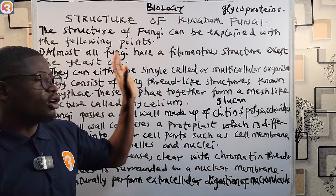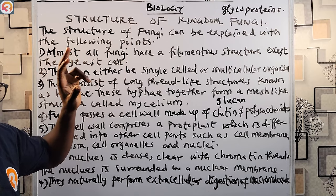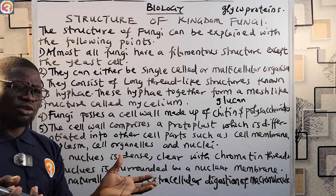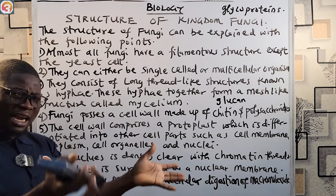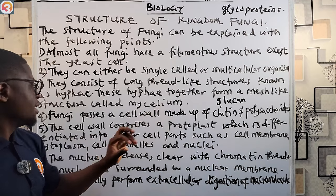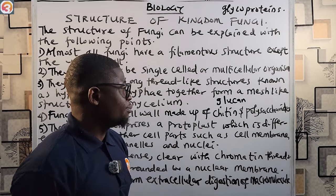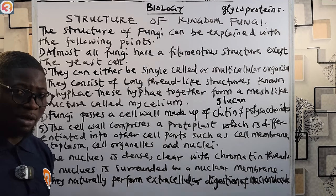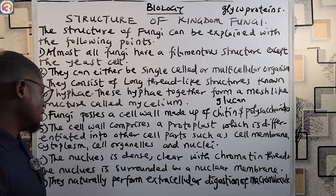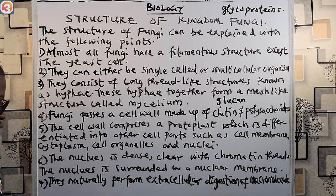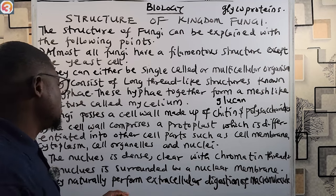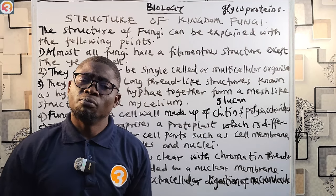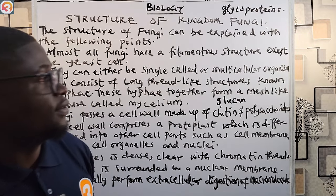To summarize the structure of fungi: almost all fungi have a filamentous structure except the yeast cell; they can be either single-celled or multicellular; they consist of long thread-like structures called hyphae, and hyphae together form a mesh-like structure called mycelium. Fungi possess a cell wall made of chitin, glucan, glycoprotein, and polysaccharides. The cell wall comprises a protoplast differentiated into the cell membrane, cytoplasm, cell organelles, and nuclei. The nucleus is dense with chromatin threads and surrounded by a nuclear membrane. Fungi perform extracellular digestion of macromolecules.